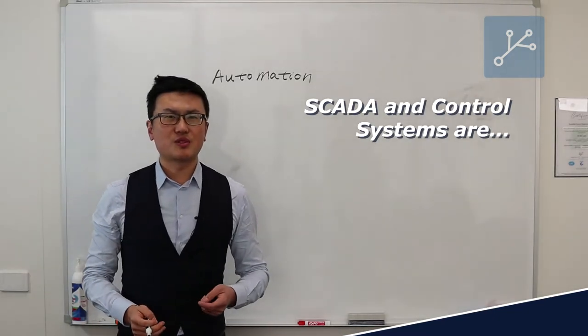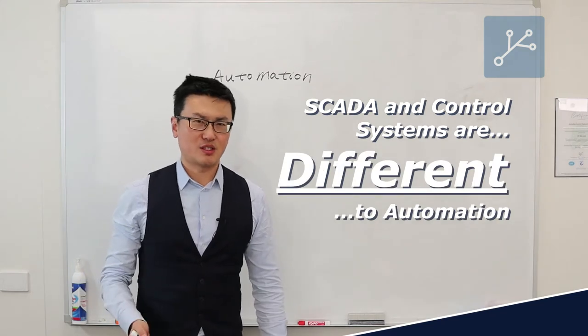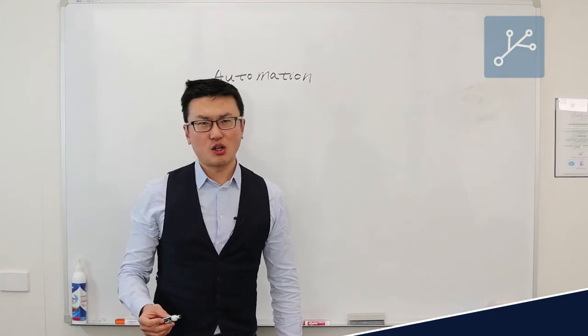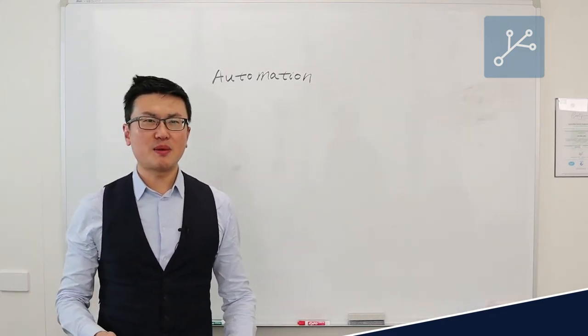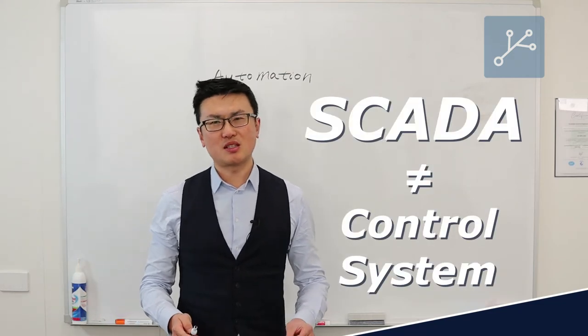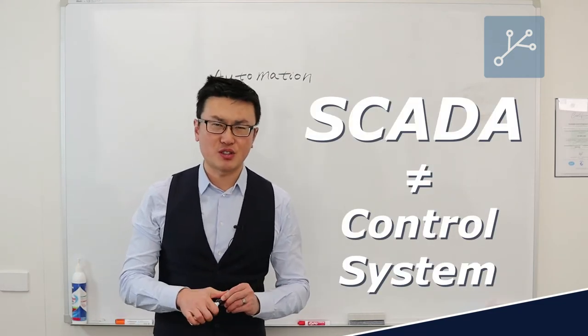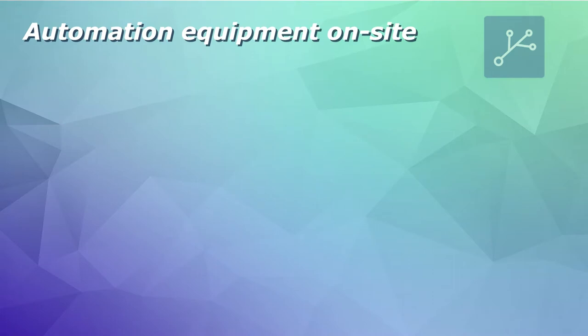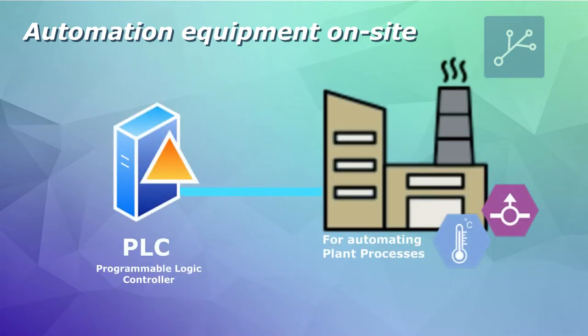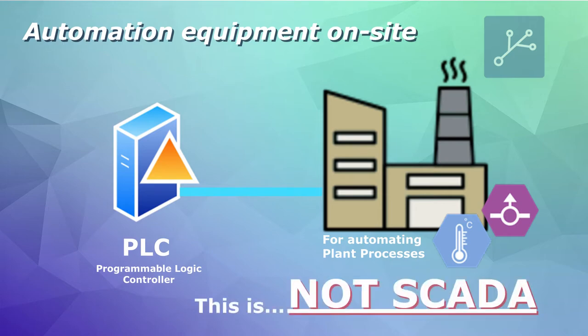SCADA and control systems are in different categories. I quite often hear people mention SCADA but they really mean control systems and vice versa. For example, when people talk about having PLCs on site for doing the automation of the processes, they will call it SCADA.